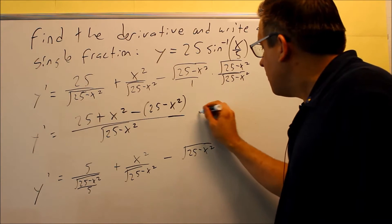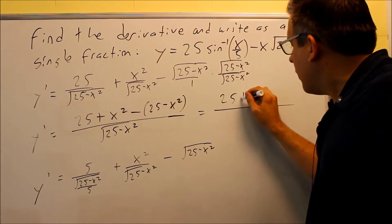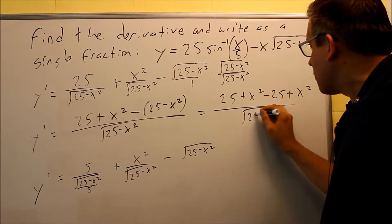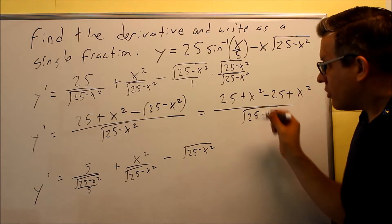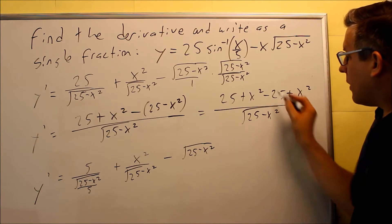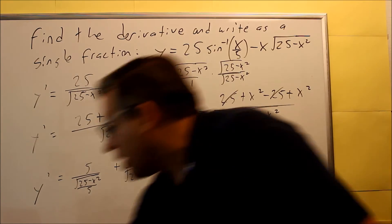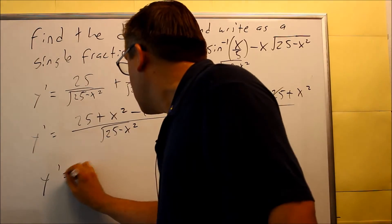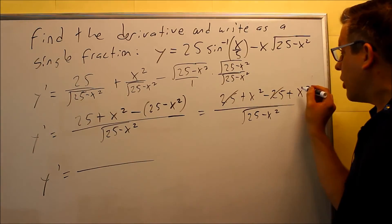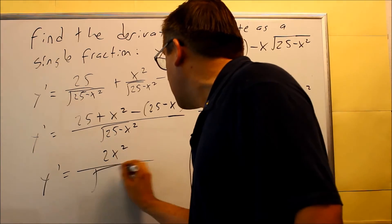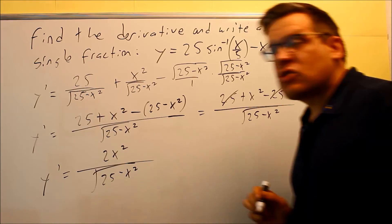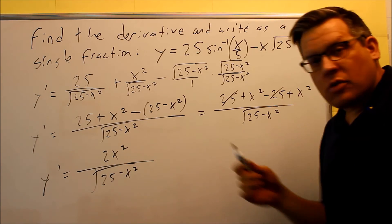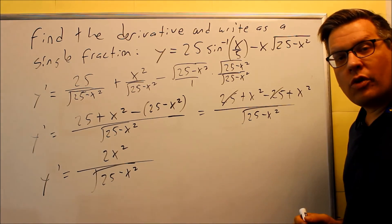Now I simplify: 25 + x² minus 25 plus x². Make sure you distribute that negative — the negatives are very important in this problem. By doing so, the 25s cancel out. So our final answer is 2x² over √(25 − x²). Remember you can't take the square root of each term separately, so this is as far as we can go with the answer as a single fraction.